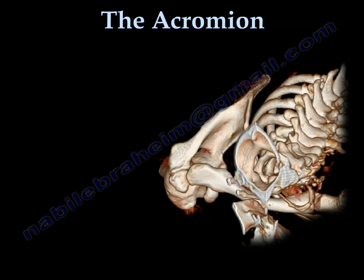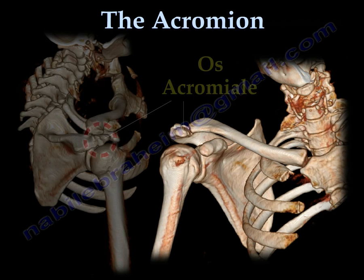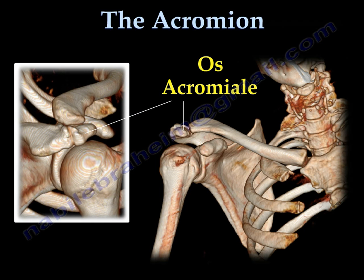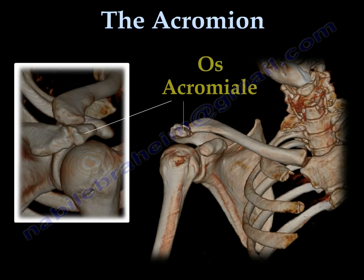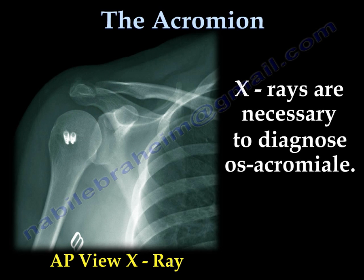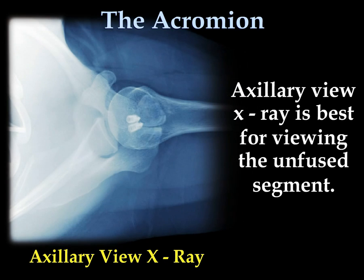This is a 3D CT scan showing an os acromiale. X-rays are usually necessary to diagnose os acromiale. Sometimes it's hard to see in the AP view of the shoulder — the axillary view is the best view for diagnosing and visualizing the unfused segment.